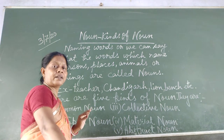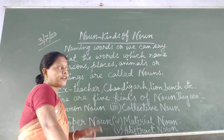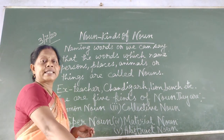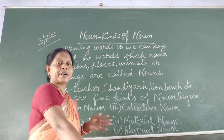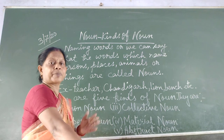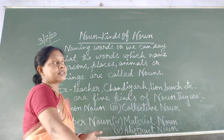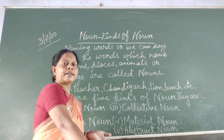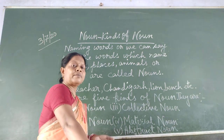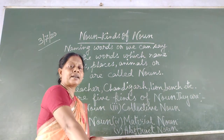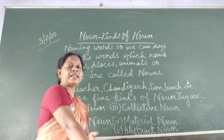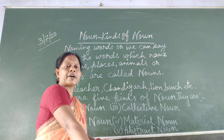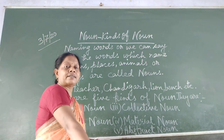For example, if you have to give examples of noun persons, you can say: boy, girl, father, mother, uncle, aunt, teacher, principal — and so on in this way.